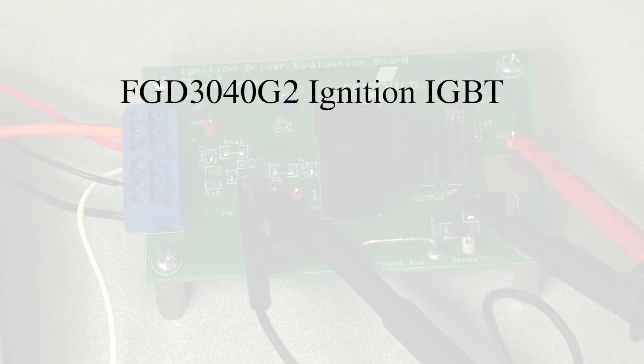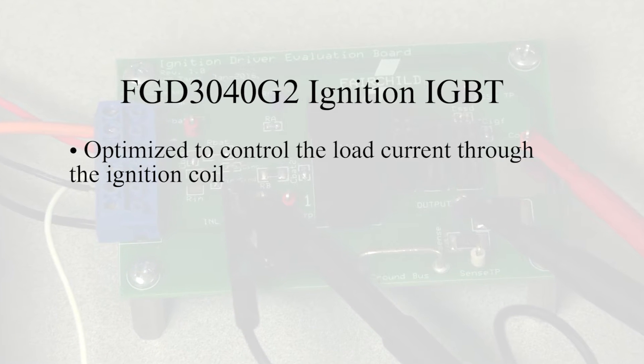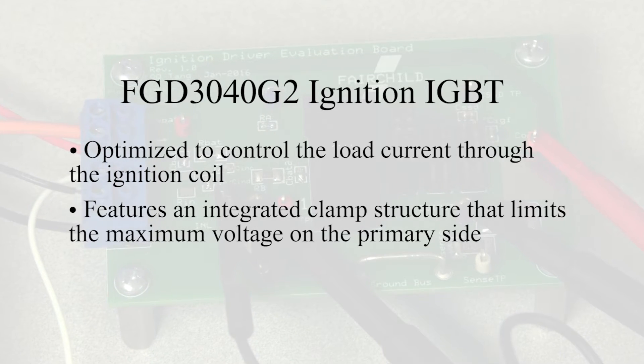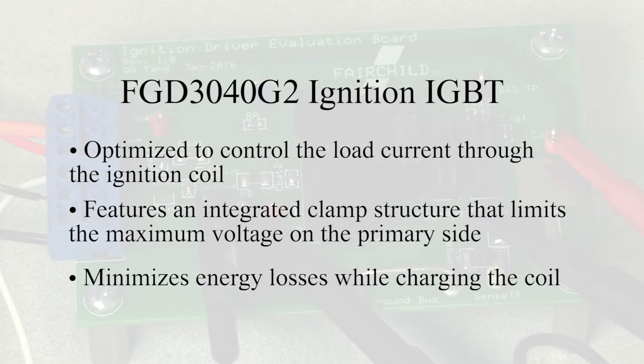The FGD3040G2 is optimized to control the load current through the ignition coil, features an integrated clamp structure that limits the maximum voltage on the primary side, and minimizes energy losses while charging the coil.